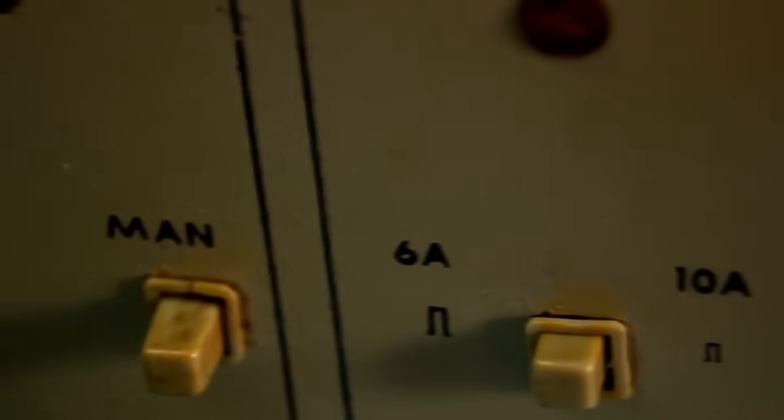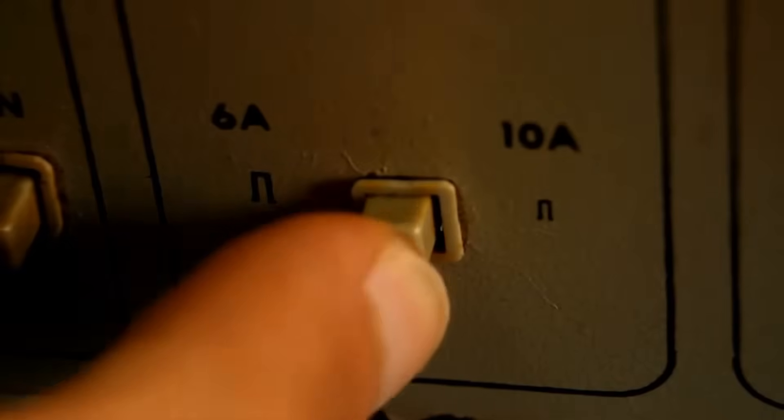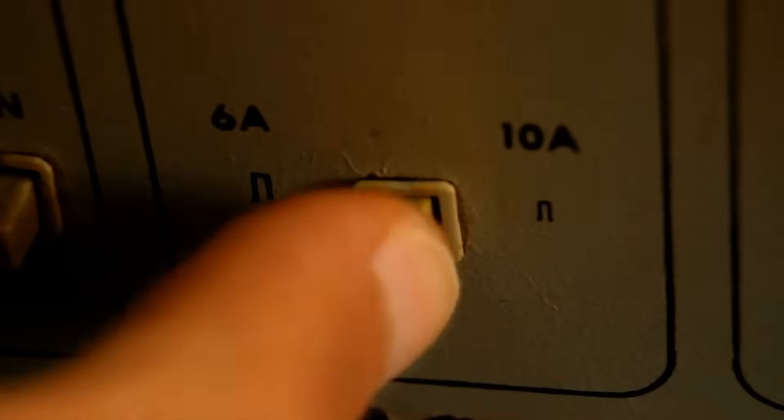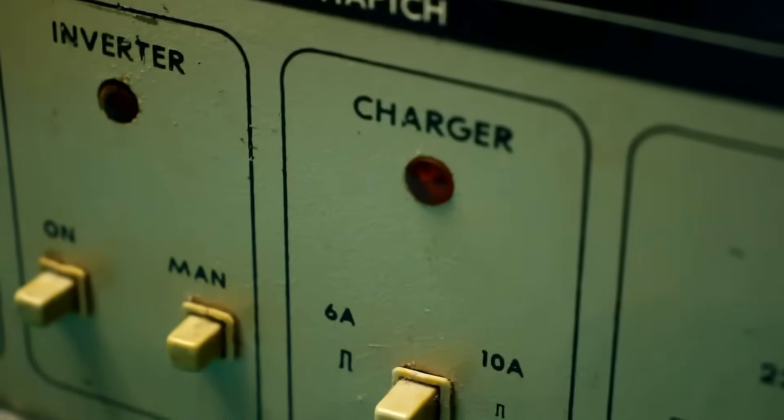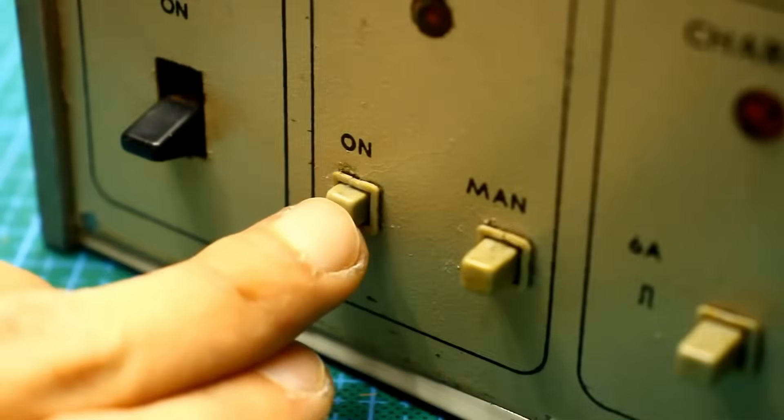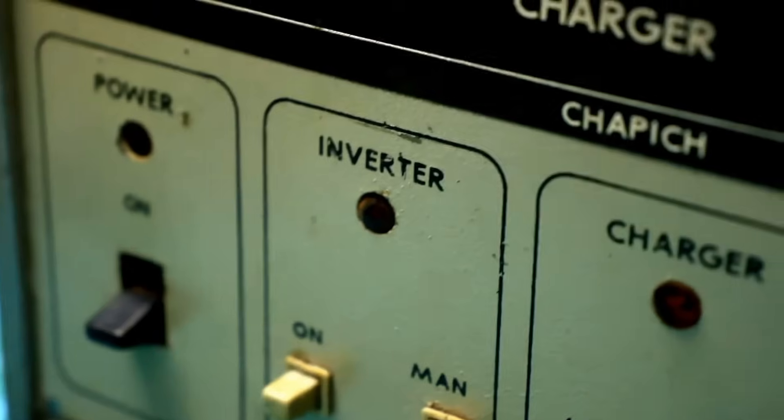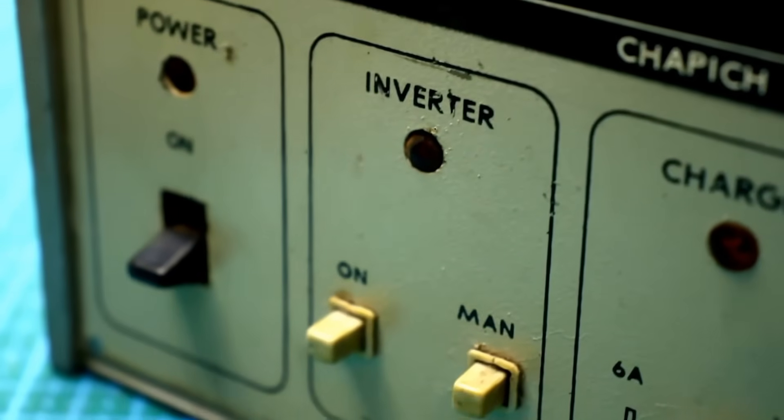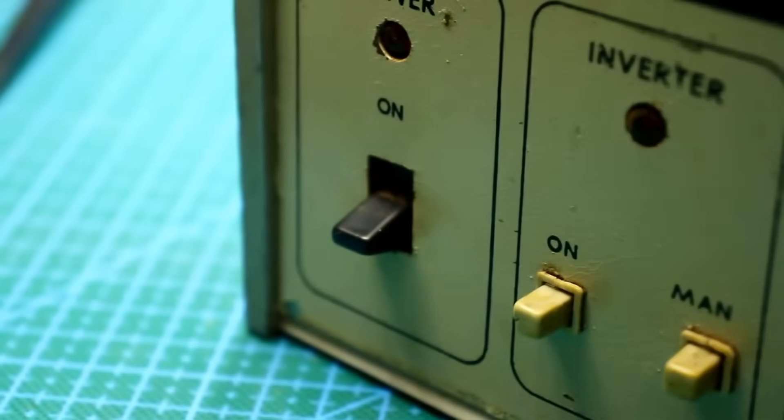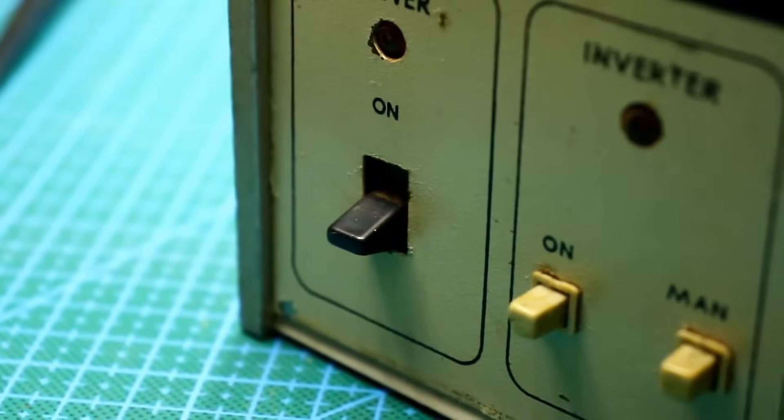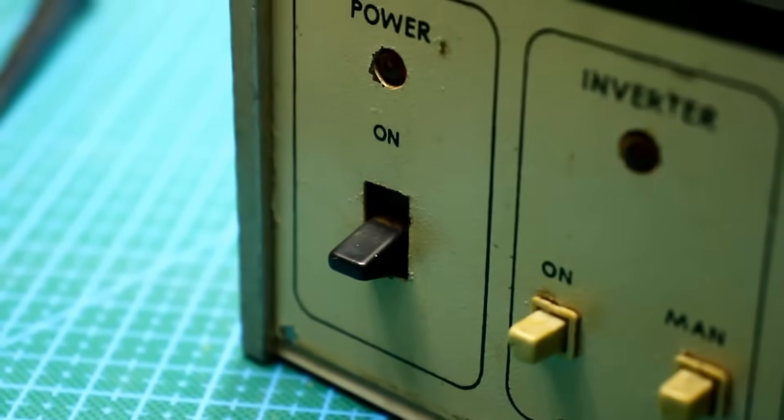Next, I dare say, are the charger settings. A button for selecting the charging current and LED indicators. Next to it are the converter settings: on, off, and another button. Most likely some kind of manual mode. For example, quick shutdown or something like that. And the network, a switch with an indicator.